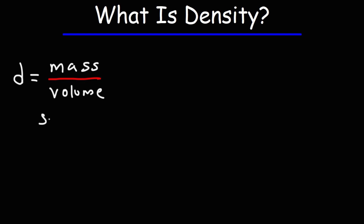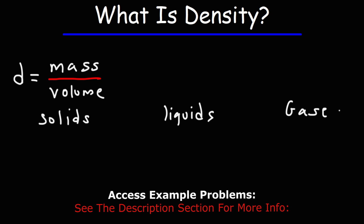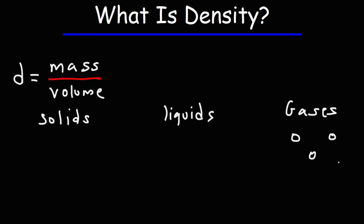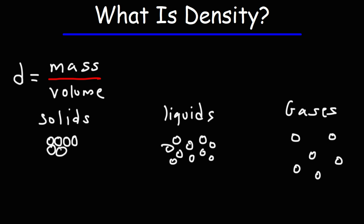Let me give you a visual illustration of this. Let's compare solids with liquids and gases. The molecules in a gas are far apart from each other. In a liquid, the molecules are closer together. In a solid, typically, they are tightly packed next to one another. So looking at that, which of these three phases would you say will usually have the highest density?